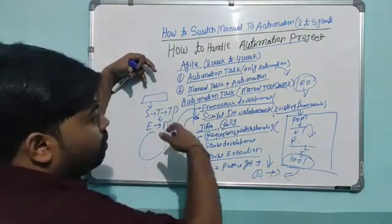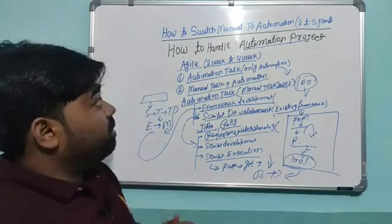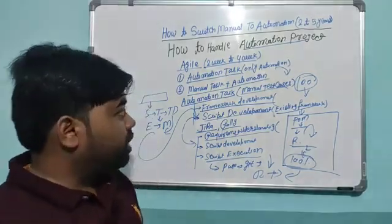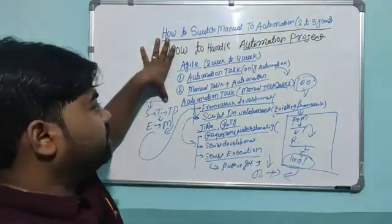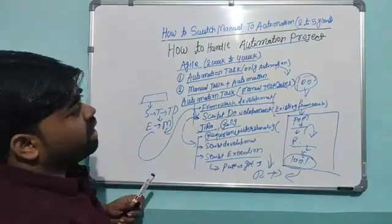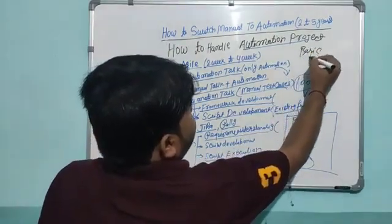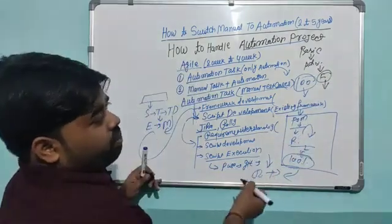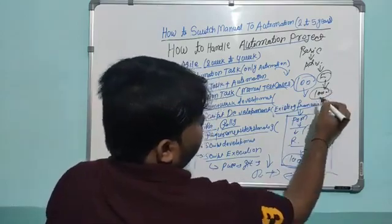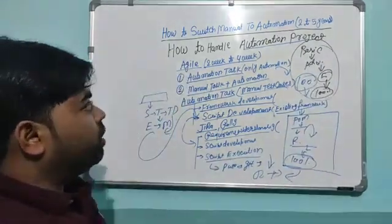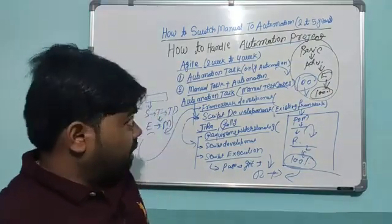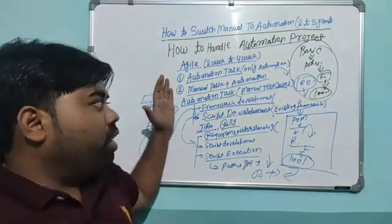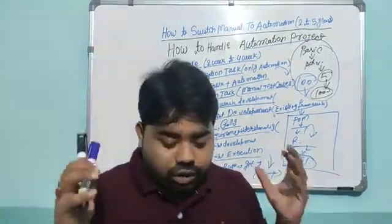That's the summary of this video. Many people struggle because they don't know what will happen when they join a company, so I wanted to provide a clear picture. The roadmap is: learn the basics of your technology, such as Java and Selenium, then go for advanced topics, then framework development, then automate at least 100 test cases following that process. The important things to master are framework development, script execution, Git, and Jenkins. If you found this video helpful, please share, subscribe, press the bell icon, and comment any questions below.